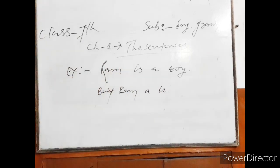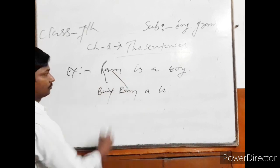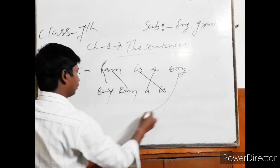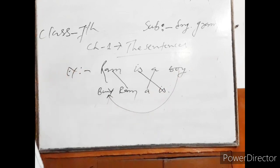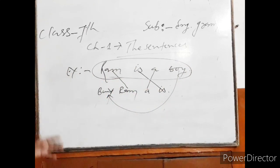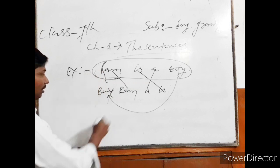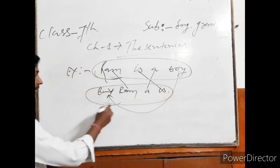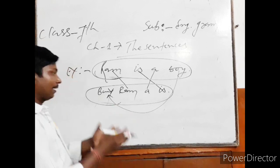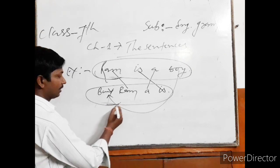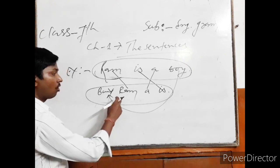Here you can see the same words, but the correct sentence gives a complete meaning — that is why it is called a sentence. But the jumbled version is also a group of words; however, it cannot give a complete meaning, so we cannot say it is a sentence. It is not a sentence; it is a wrong sentence.